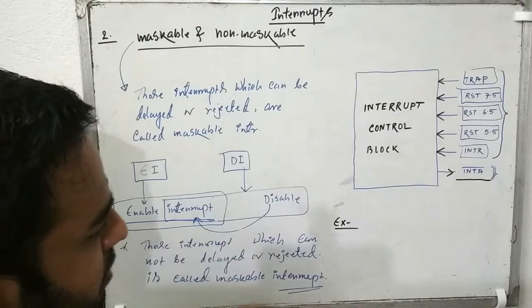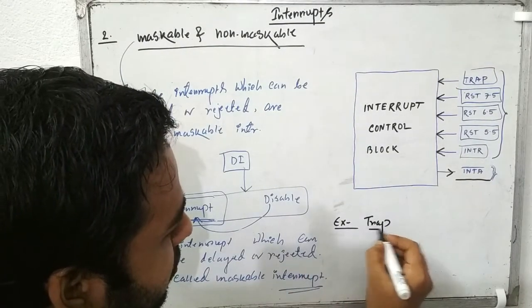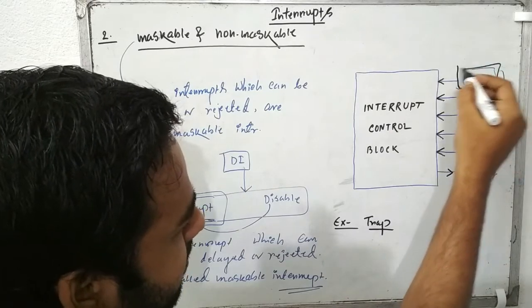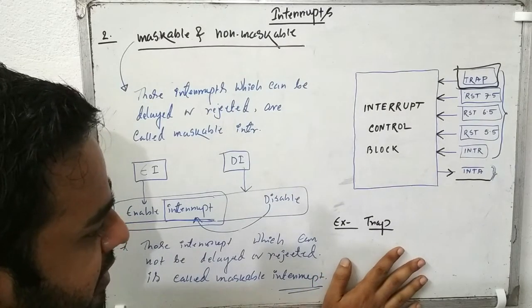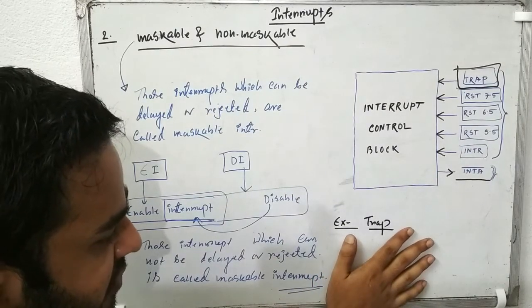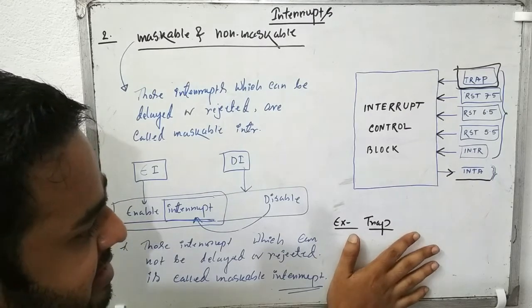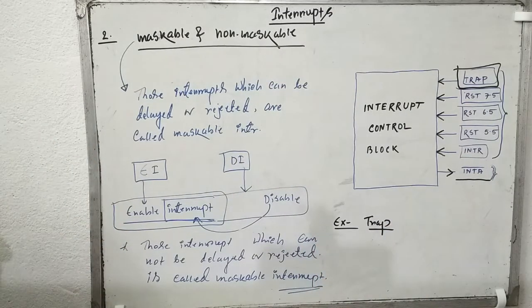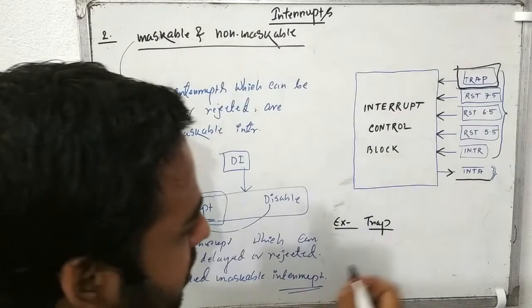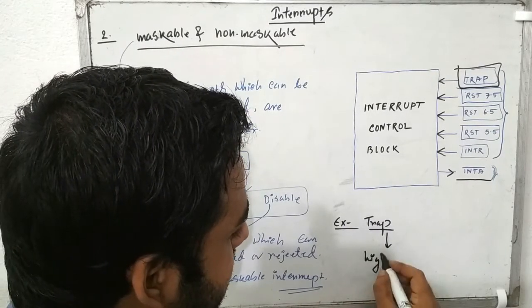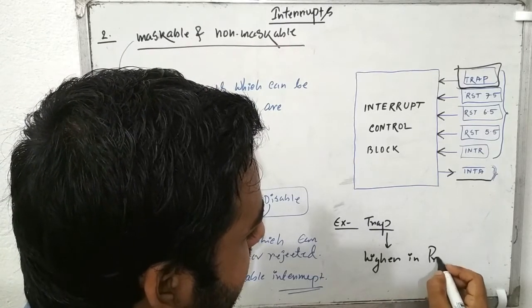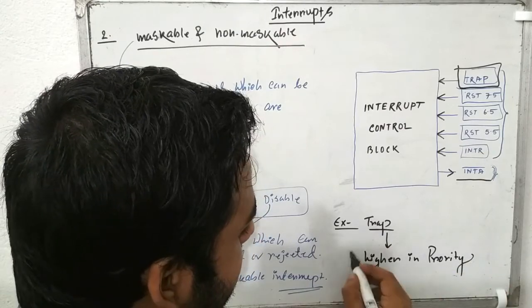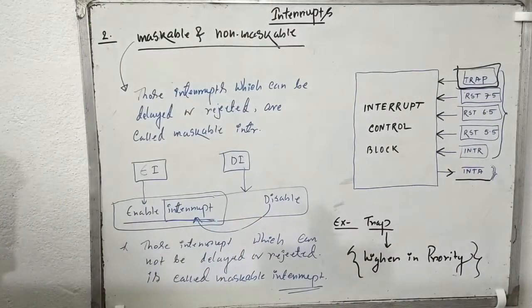As an example, there is one non-maskable interrupt available which is called TRAP. This TRAP is called a non-maskable interrupt. Besides being non-maskable, TRAP also has another significance — it is higher in priority.